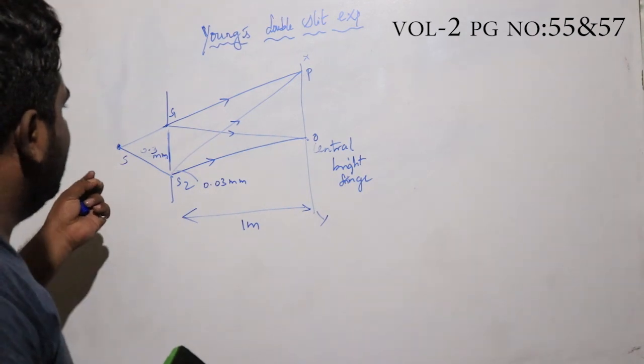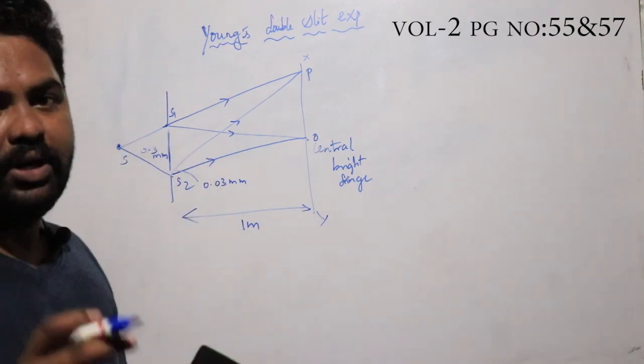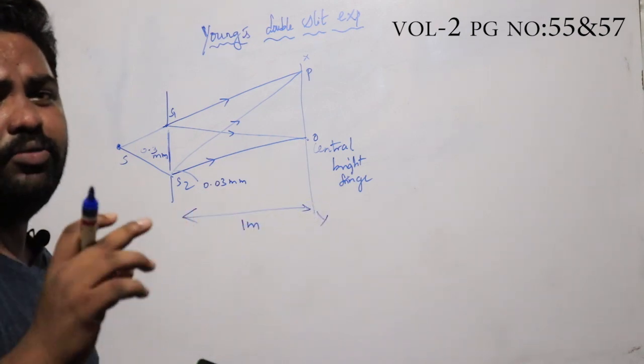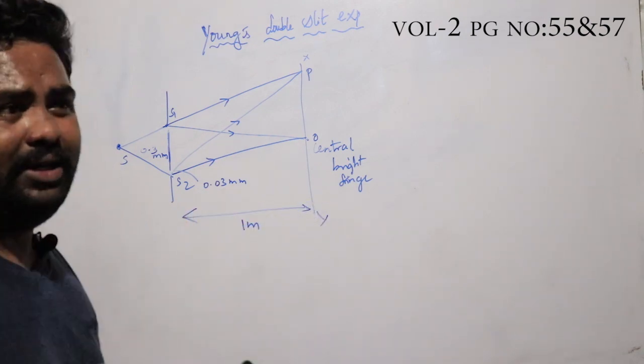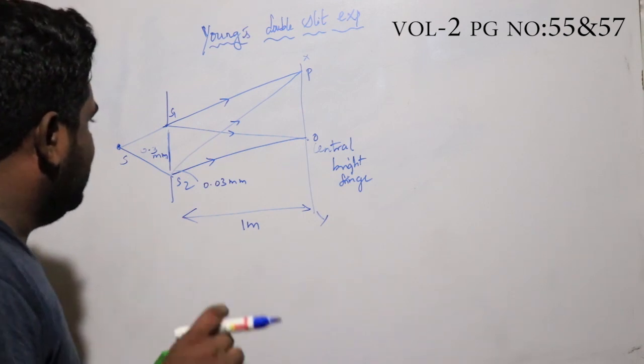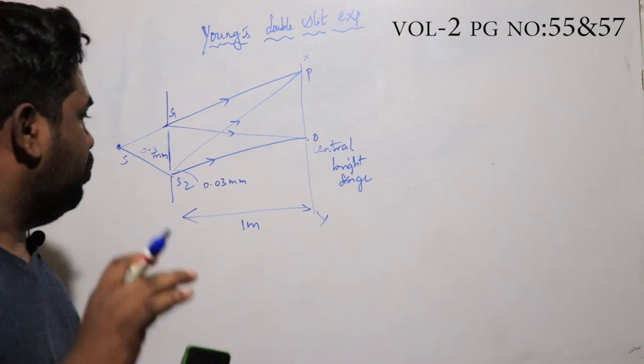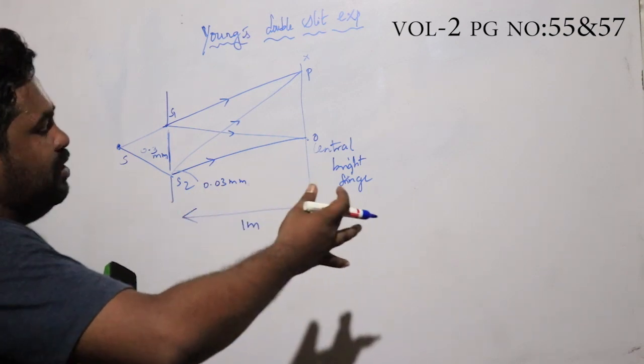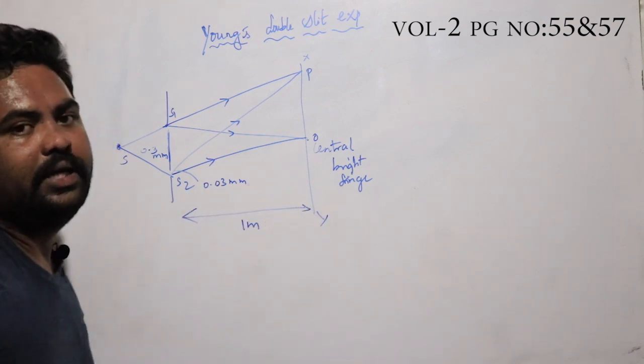For monochromatic sources, we have two slits. The distance between the two slits is 0.3 mm. The slit width is 0.03 mm. The screen distance is 1 meter.